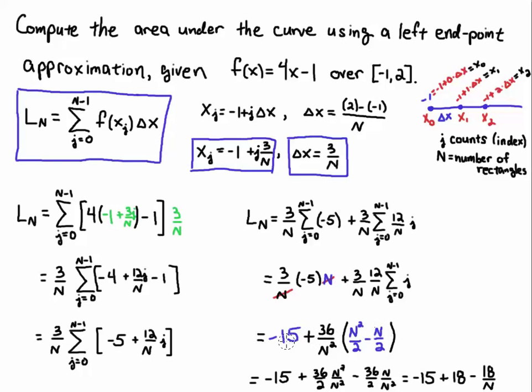Now that I have that, I'm going to distribute the 36 over n squared into this difference. So 36 over n squared times n squared over 2. Well, you'll notice that the n squareds are going to cancel. I'm going to put them on top of one another. And 36 over n squared minus n over 2. I'll have an n over n squared term and a 36 over 2 here. Now, the n squareds will cancel out. So that'll leave me with 36 over 2, which is 18. The n over n squared will leave us with an n in the denominator. And 36 divided by 2 is 18. So I'm left with minus 15 plus 18 minus 18 over n.